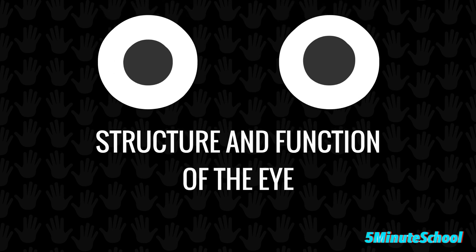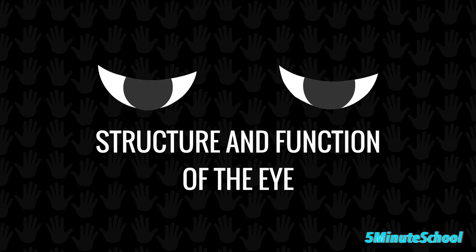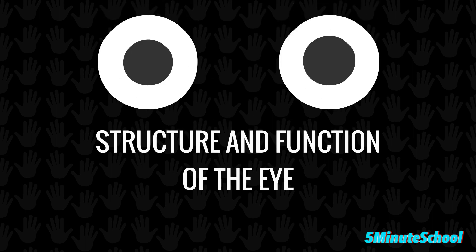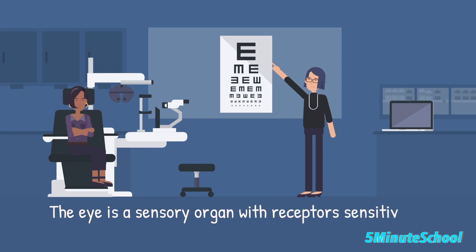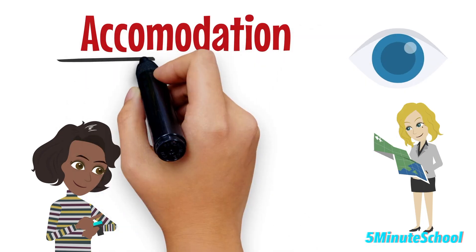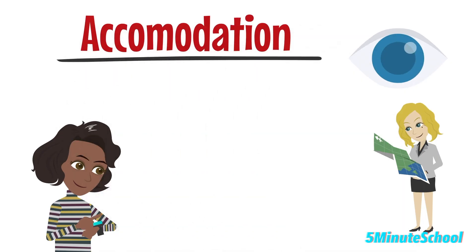Today's video we're going to be talking about the structure and function of the eye. The eye is a sense organ and it's got receptors inside which are sensitive to light intensity and color, and it can also adapt to them. There are a few different processes which go on in the eye and we're going to talk about those today.